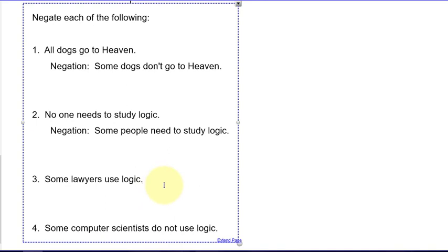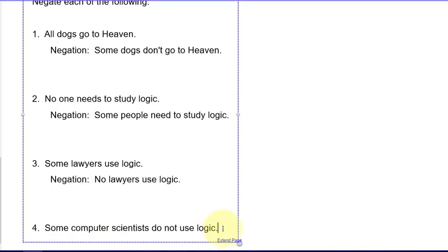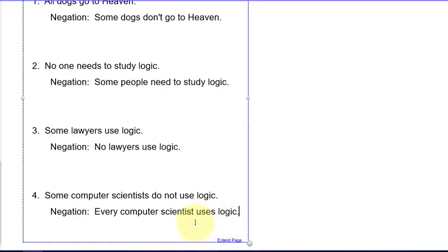Number three: 'some lawyers use logic.' The negation of 'some' is 'none,' so the negation is 'no lawyers use logic.' Number four: 'some computer scientists do not use logic.' The negation of 'some don't' is 'all do' — so the negation is 'all computer scientists use logic' or 'every computer scientist uses logic.' These are logically equivalent from the common understanding of these words, so you could write it either way and be logically correct.